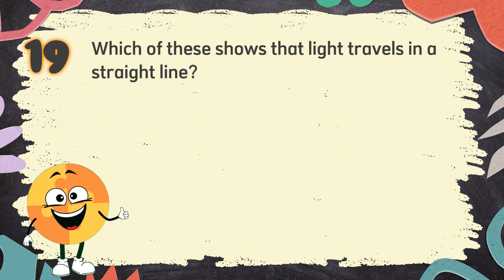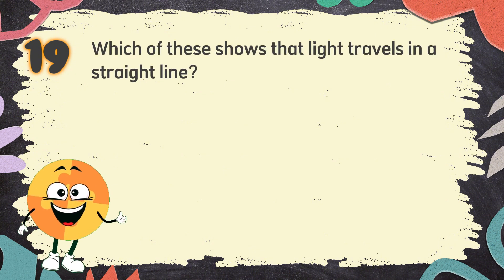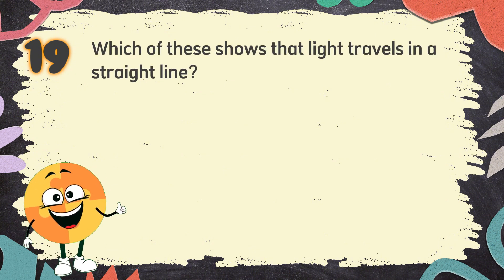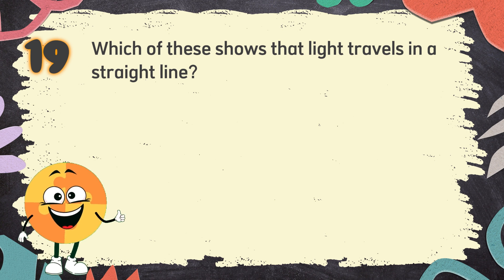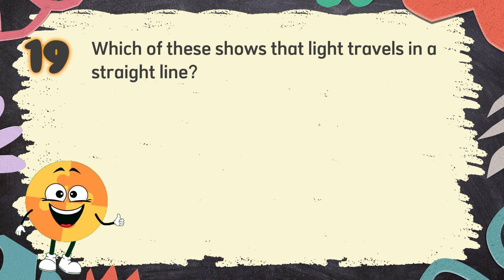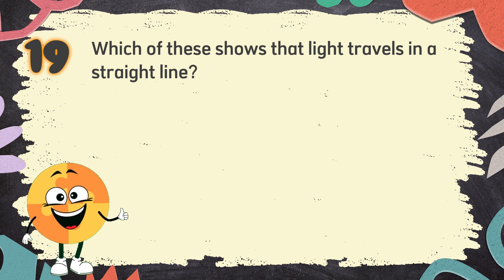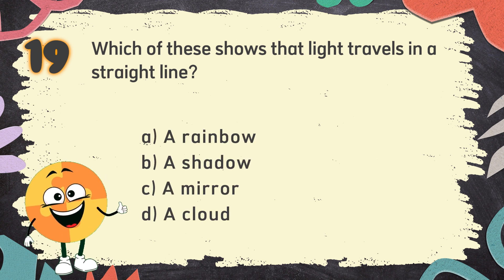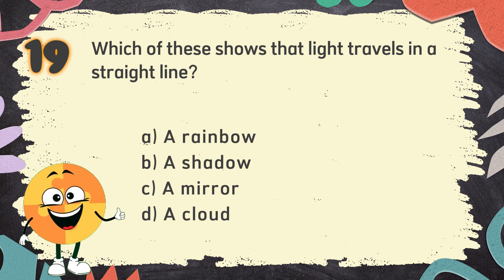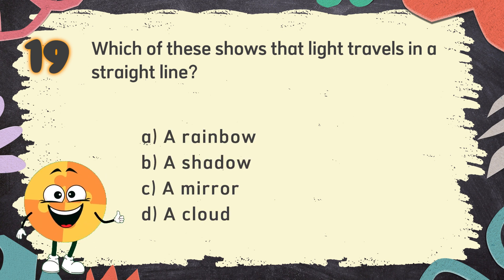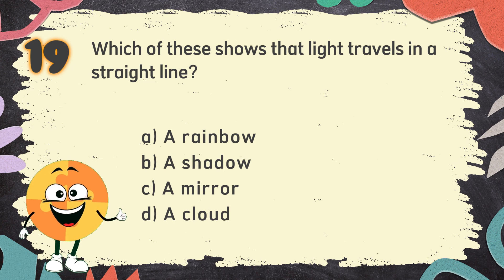Number 19. Which of these shows that light travels in a straight line? The choices are: A. A rainbow, B. A shadow, C. A mirror, D. A cloud.